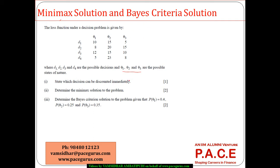A decision can be discounted immediately if, for any one decision, the losses under all states are less than or equal to the other decision. Look at here — in case of D1, D1 is greater than D2 in one state but D1 is less than D2 in another. So D1 and D2 cannot be dominating each other.